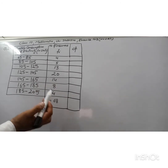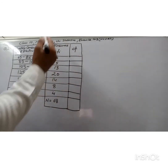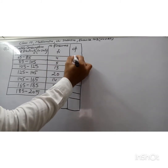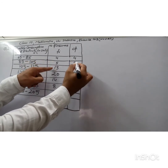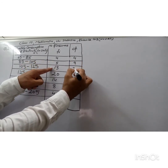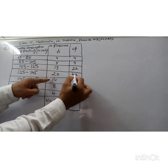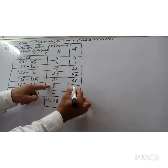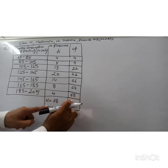First, we will find the cumulative frequency. Write the first frequency as 4, then add 4 and 5 to get 9, then 9 + 13 = 22, then 22 + 20 = 42, then 42 + 14 = 56, then 56 + 8 = 64, and 64 + 4 = 68. The last cumulative frequency must equal n = 68.